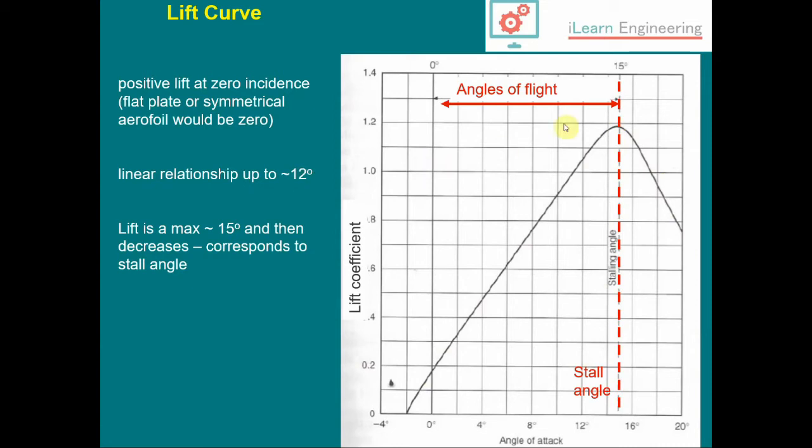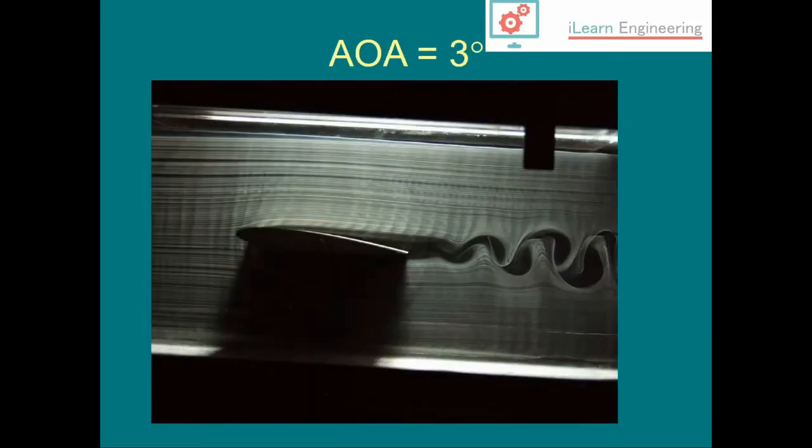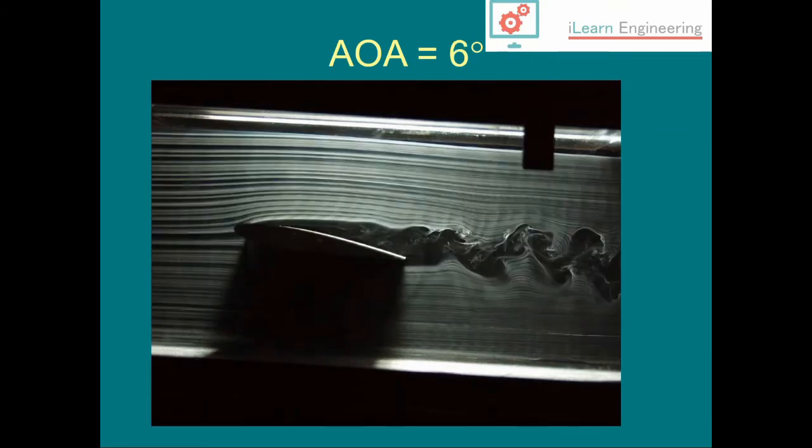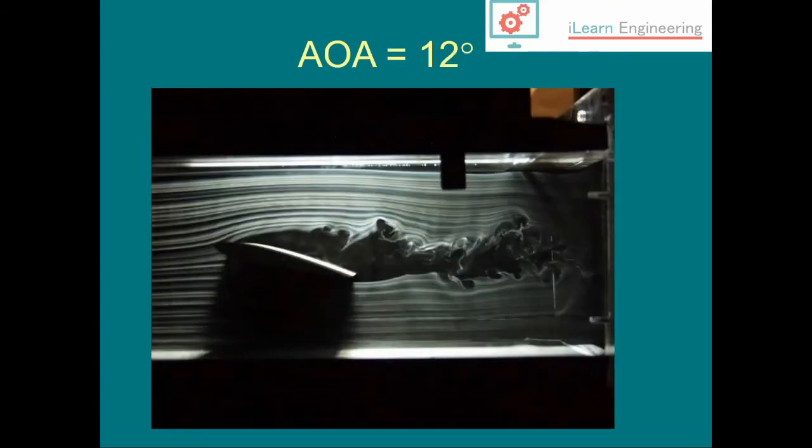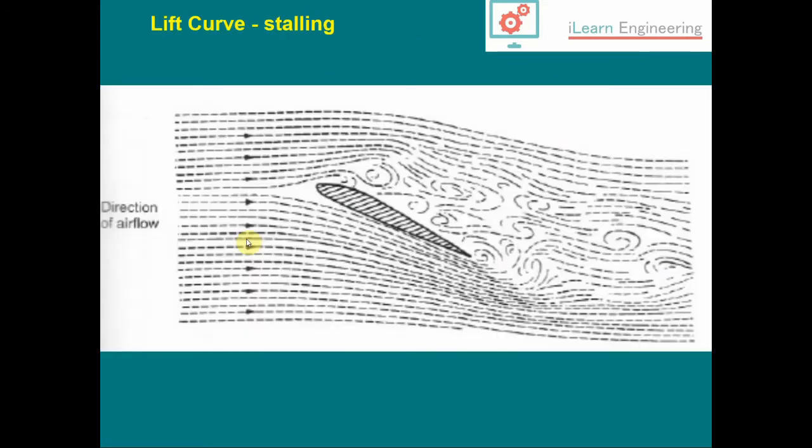If we want to stay below the stall angle, this helps define various angles for normal flight. Here are pictures from a wind tunnel experiment showing streamlines with flow visualization. We have quite a low angle of attack of three degrees, and as we increase the angle steadily, we start to see separation of the flow on the upper surface, starting to go into a stall.